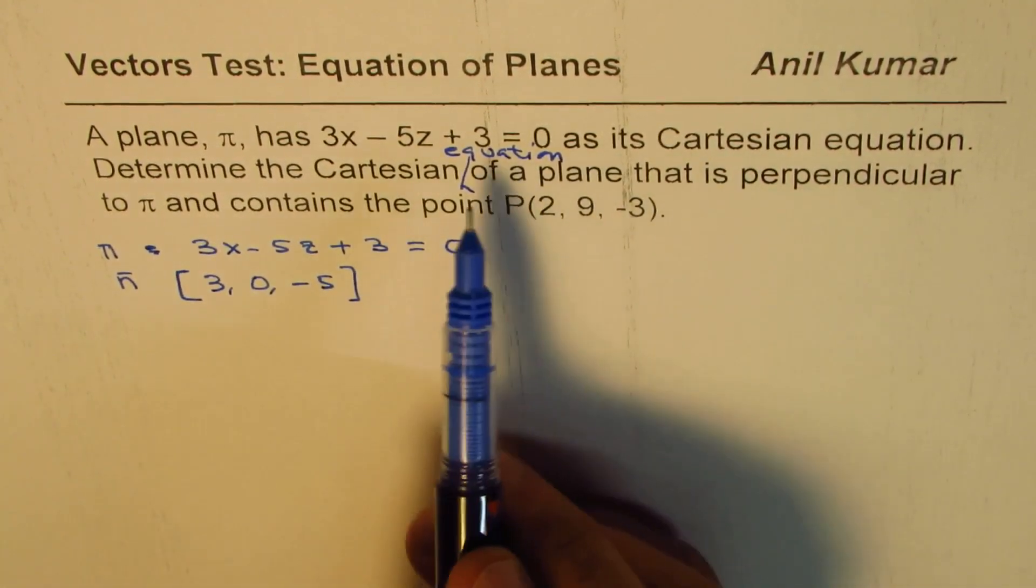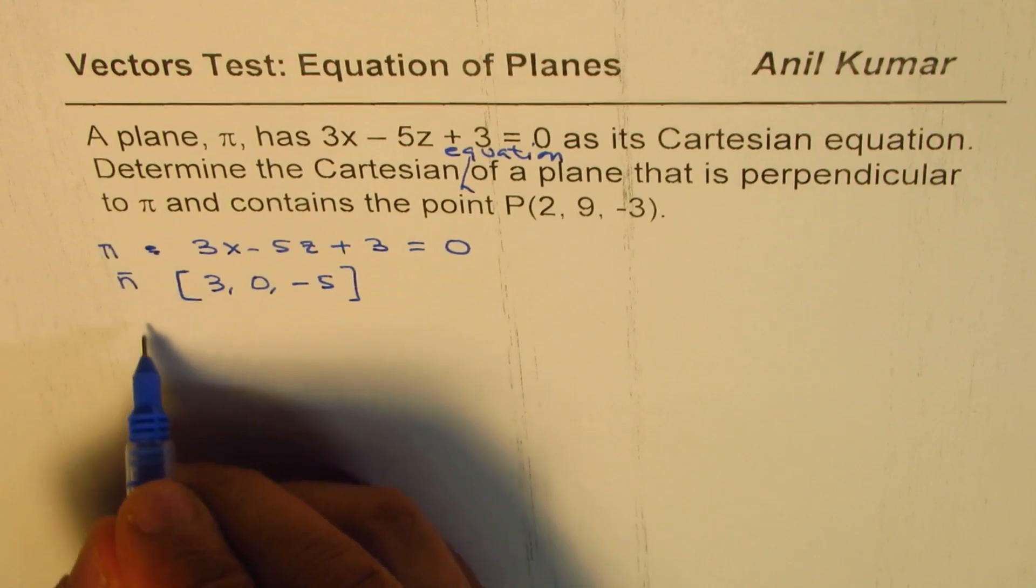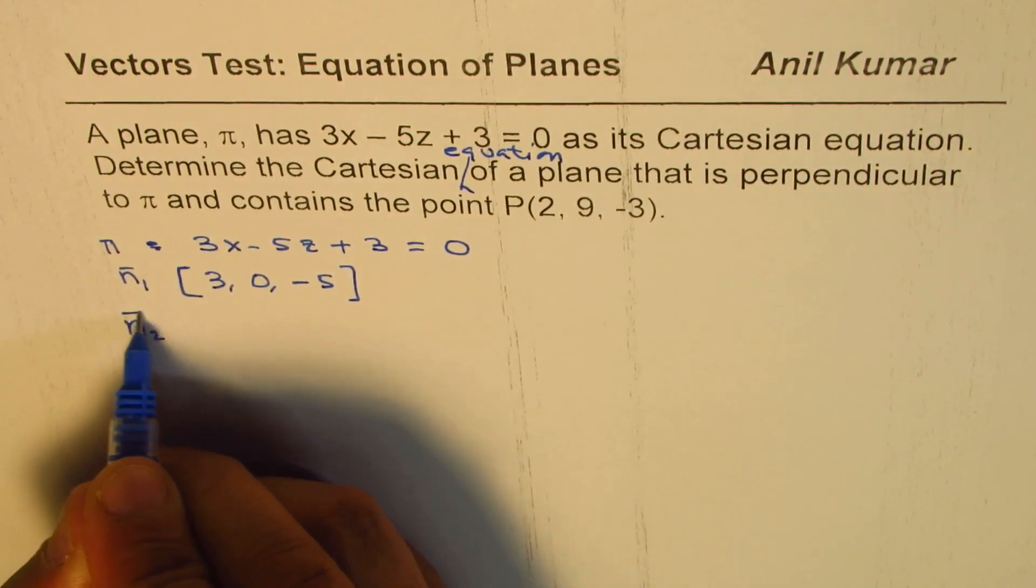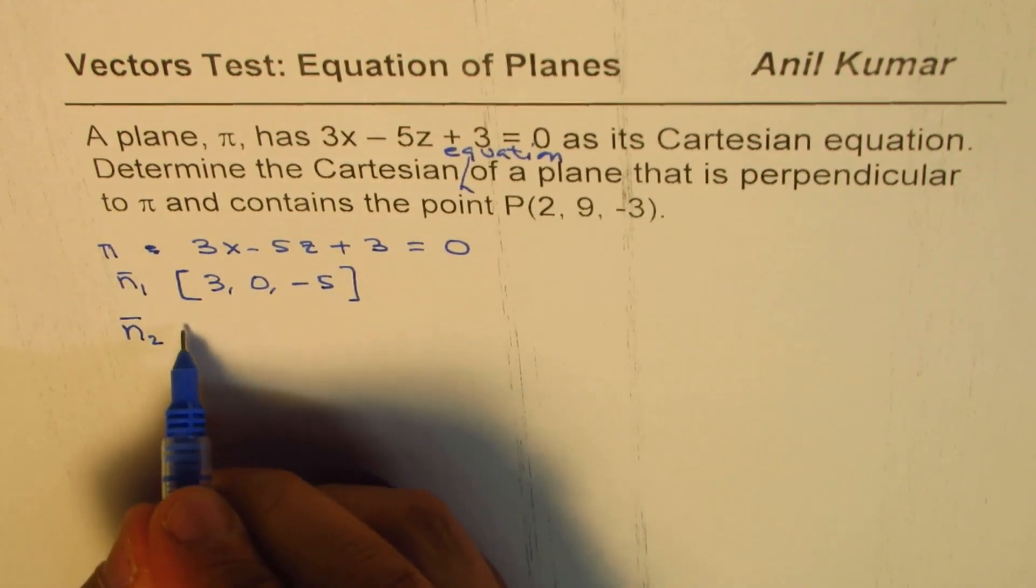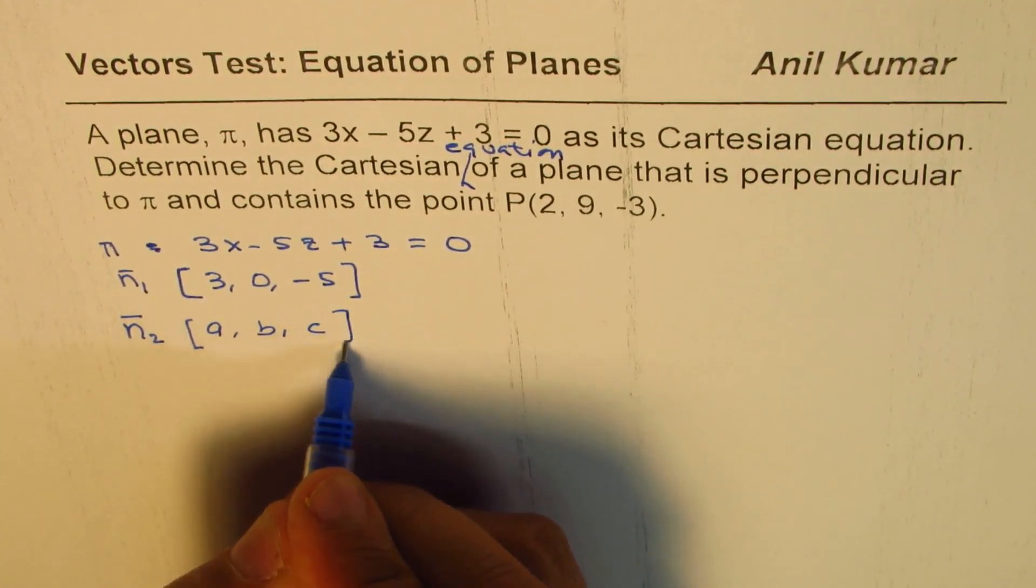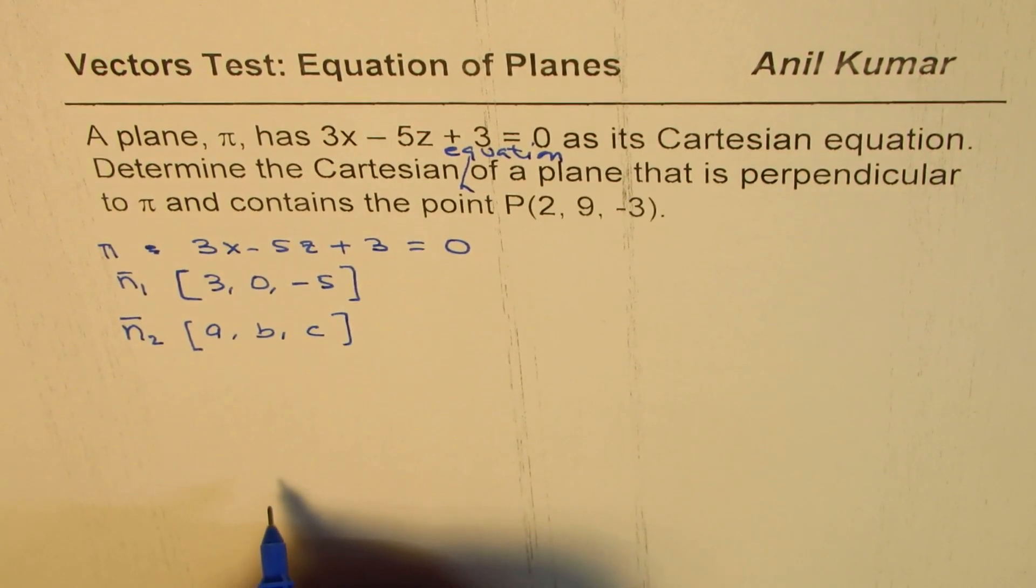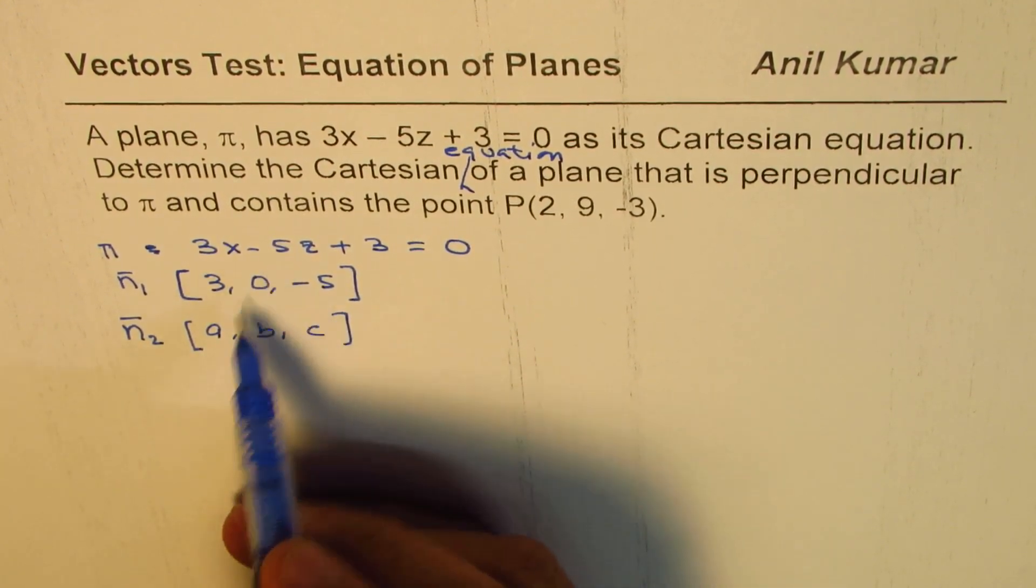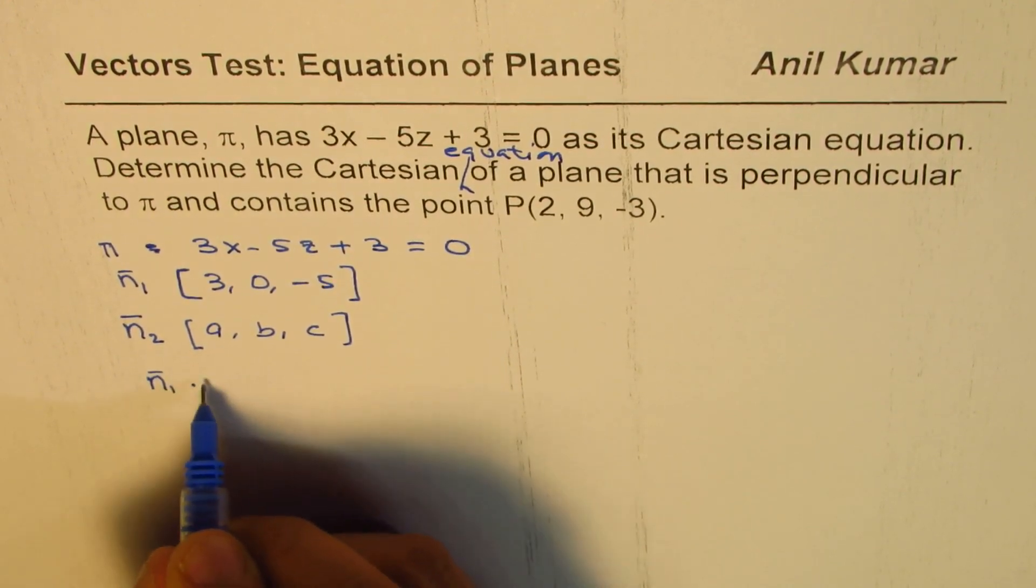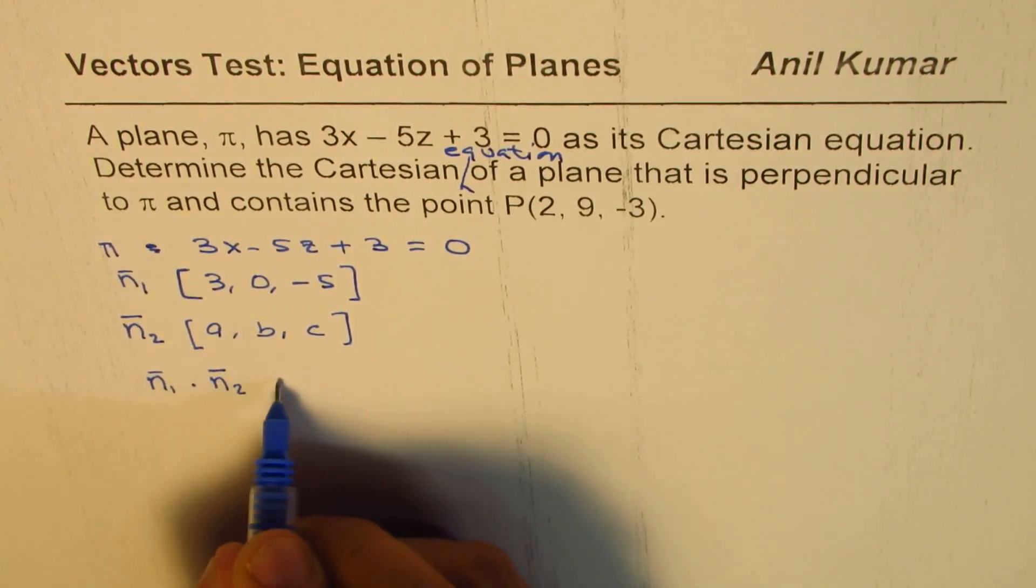Now we want the Cartesian equation of a plane which is perpendicular. Let's call the normal of the other plane n₂ = [a, b, c]. Since these two normals should be perpendicular, that is to say n₁ · n₂ should be equal to zero.